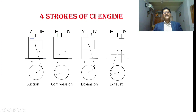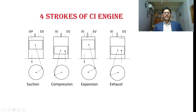The fundamental difference between the spark ignition engine and the compression ignition engine is that in the case of the spark ignition engine a mixture of air and fuel is drawn into the engine cylinder during the suction stroke. In the case of the CI engine, only air is drawn into the engine cylinder as the piston moves from TDC to BDC during the suction stroke.